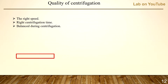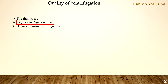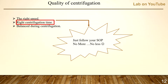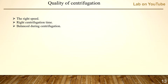The second parameter in quality of centrifugation is time. For time, just follow your standard operating procedure. If it says 10 minutes, no more and no less — even 9 minutes will affect the quality of results. You may see clear serum but not detect silica, fibrin, platelets, or micro clots.